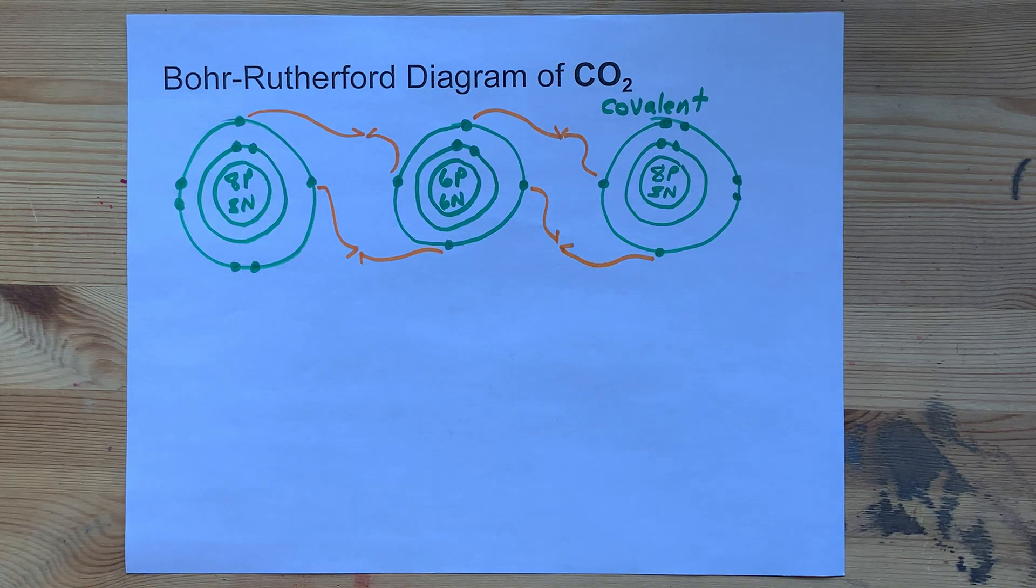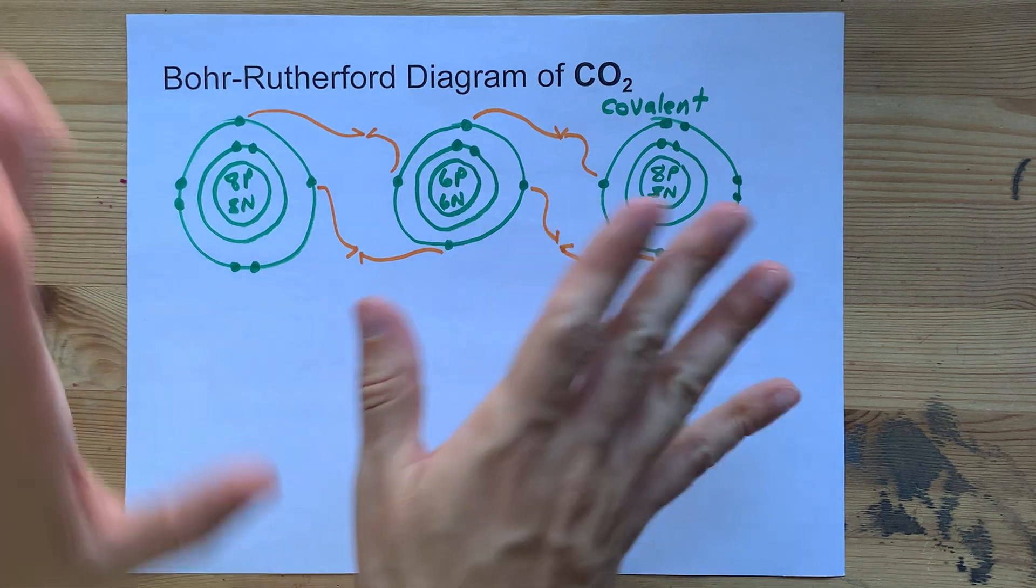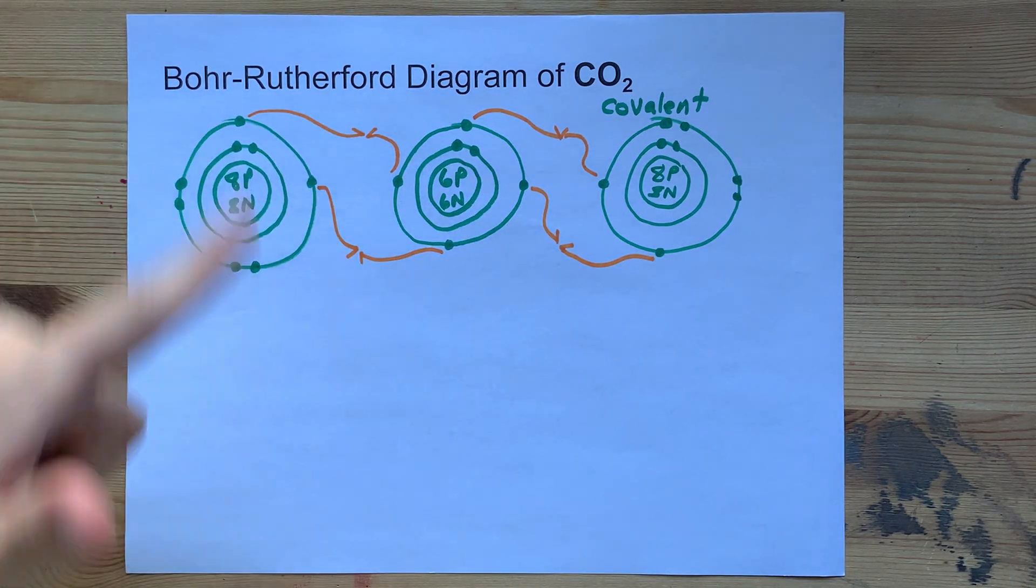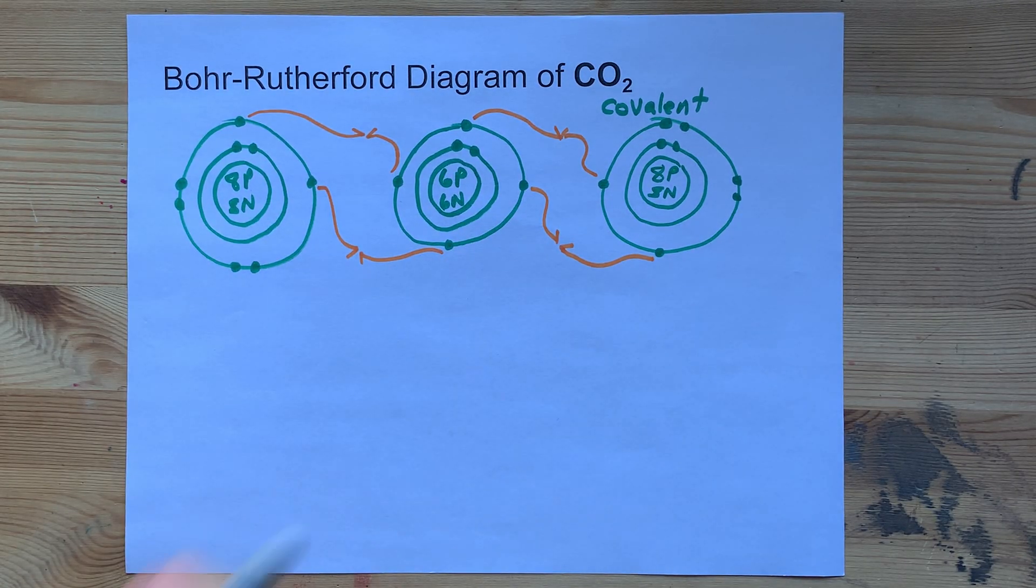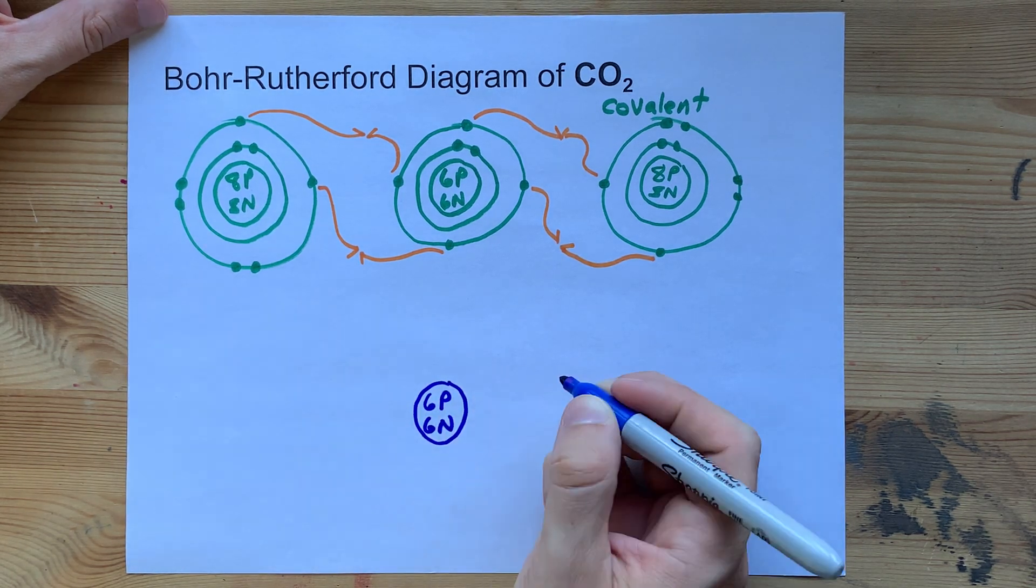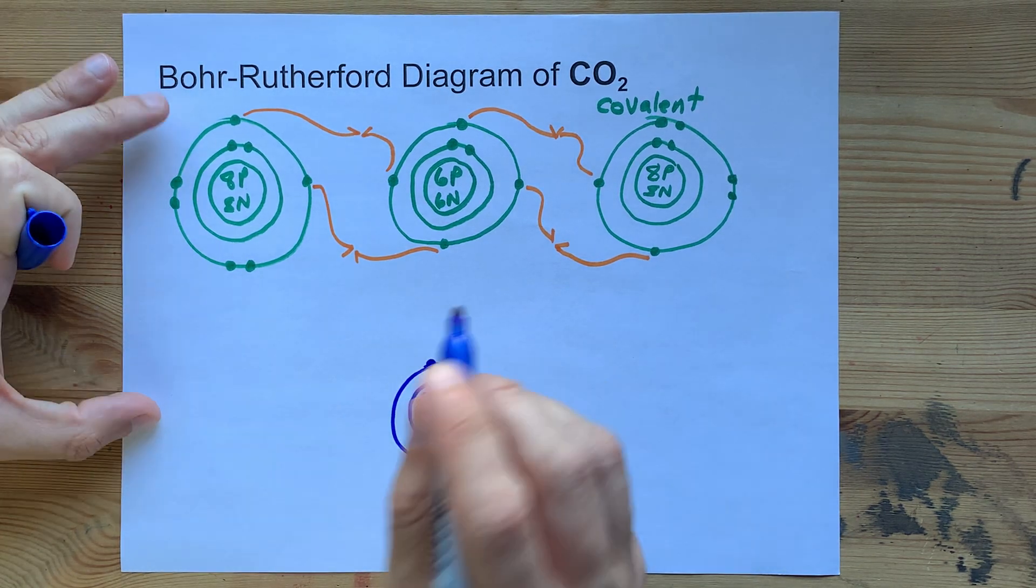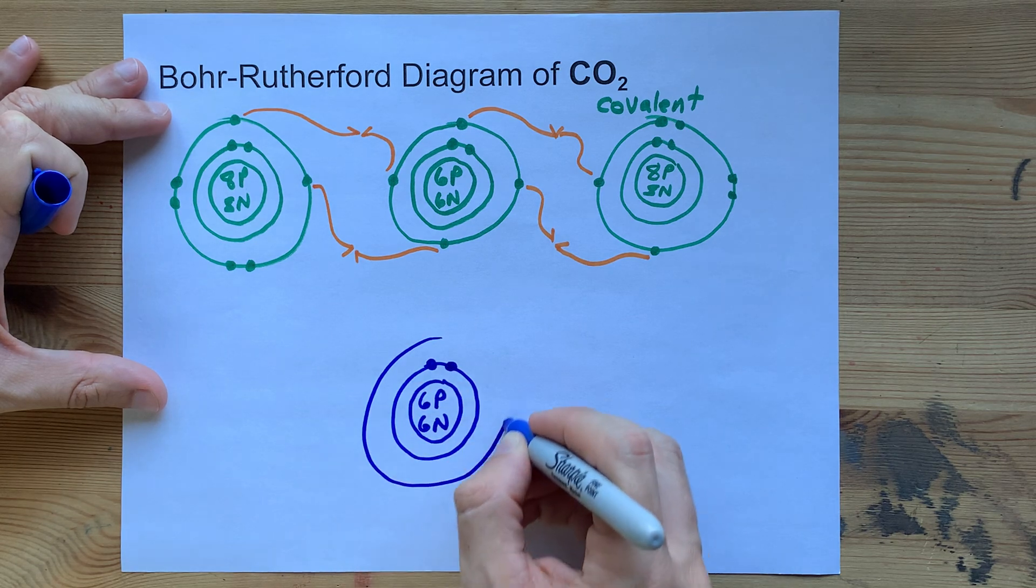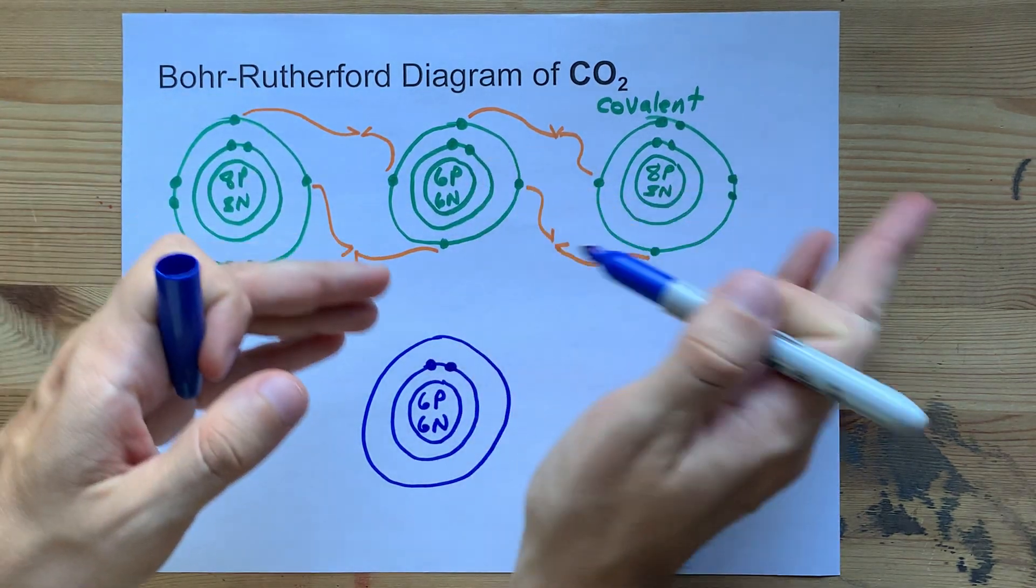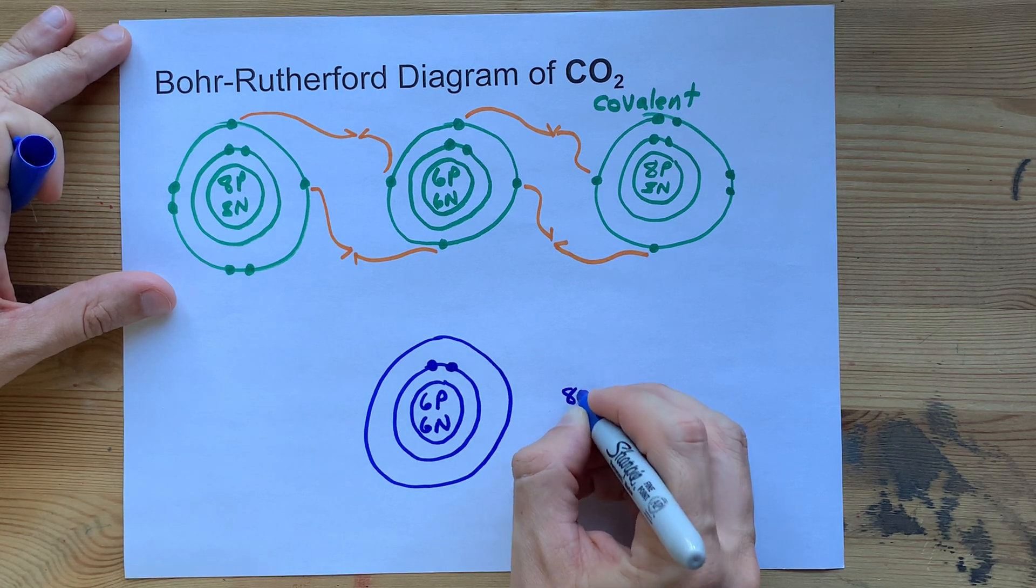These guys are already paired, so they don't need any of that action. I'm doing single-headed arrows because that's a grade 12 university thing for single electrons moving around. What matters is how this looks in the end. The carbon, which had six protons and six neutrons in its nucleus, still has two in its first shell. But in the next shell, you have those four electrons being shared, two for each of the oxygens.